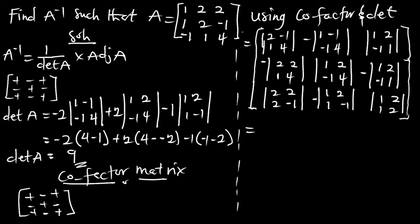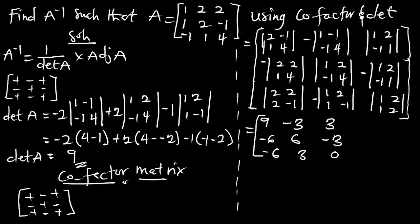Now we find the determinant for each 2x2 submatrix to get our cofactor matrix. The values we get are: 9, negative 3, positive 3; then negative 6, 6, negative 3; and negative 6, positive 3, and 0. So this matrix is the cofactor matrix of A.